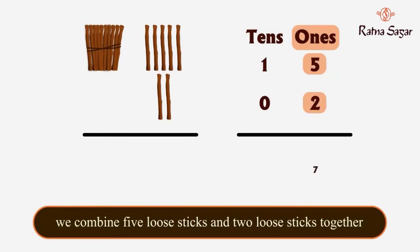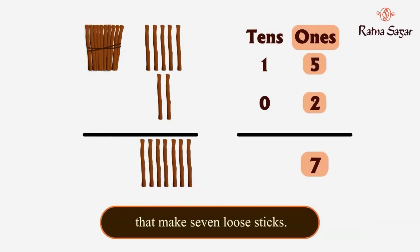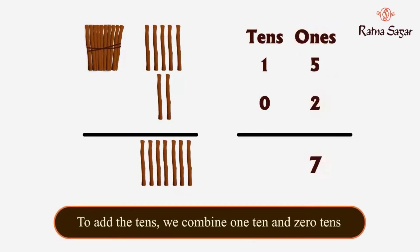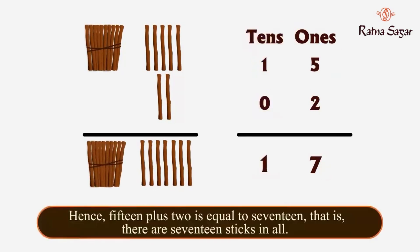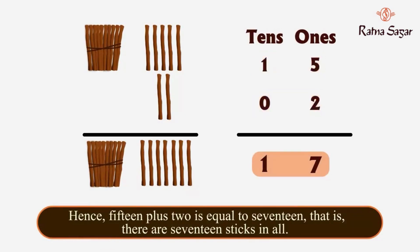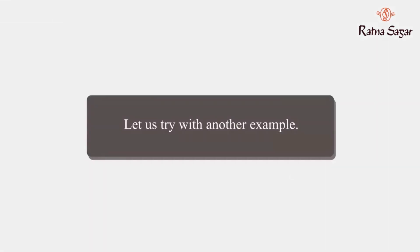That makes seven blue sticks. To add the tens, we combine one ten and zero tens together — that makes one ten. Hence, 15 plus 2 is equal to 17. That is, there are 17 sticks in all.